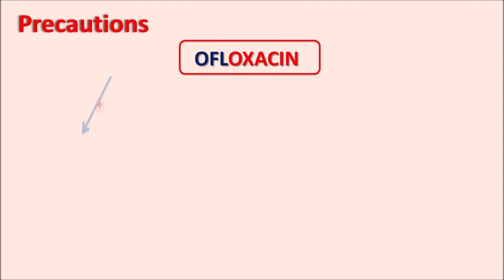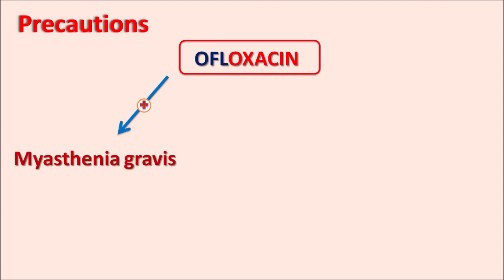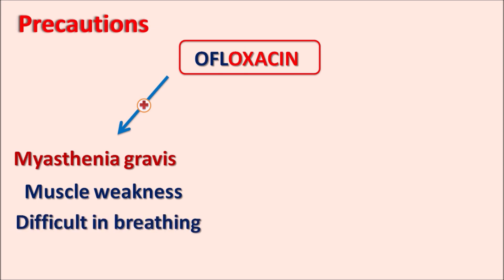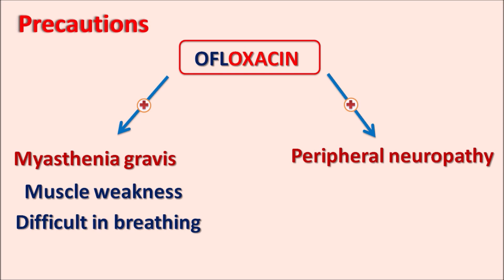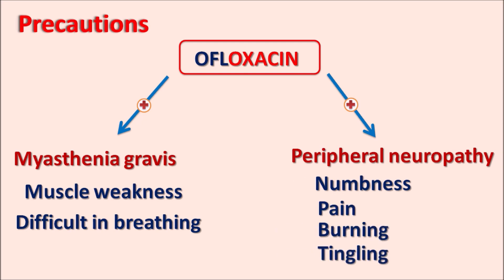Ofloxacin can also increase the risk of myasthenia gravis, producing muscle weakness and difficulty in breathing — symptoms that should be carefully monitored with chronic use. It can also increase peripheral neuropathy, with neurotoxic symptoms such as numbness, neuronal pain, burning, and tingling in the hands and feet. If a patient already has neuropathy, ofloxacin can further worsen this peripheral neuropathy.